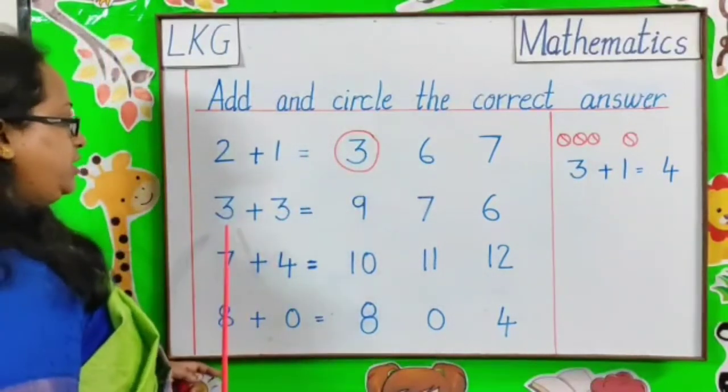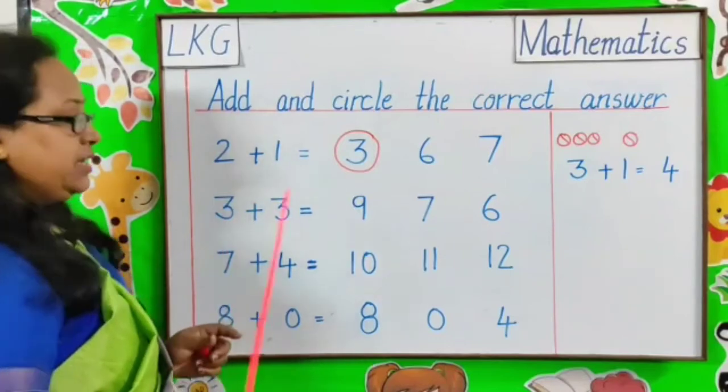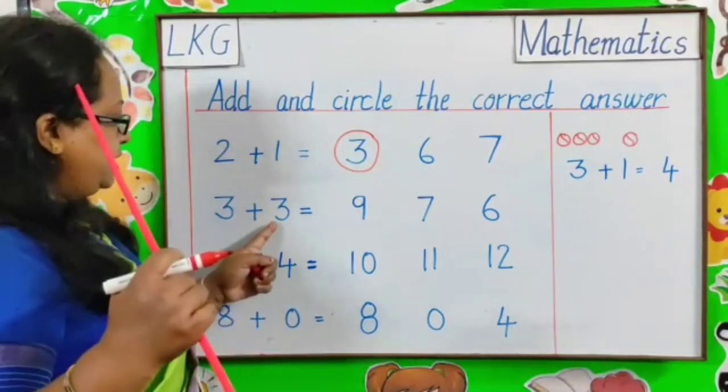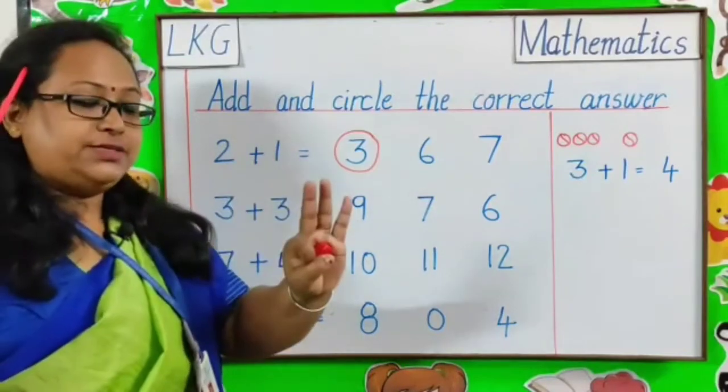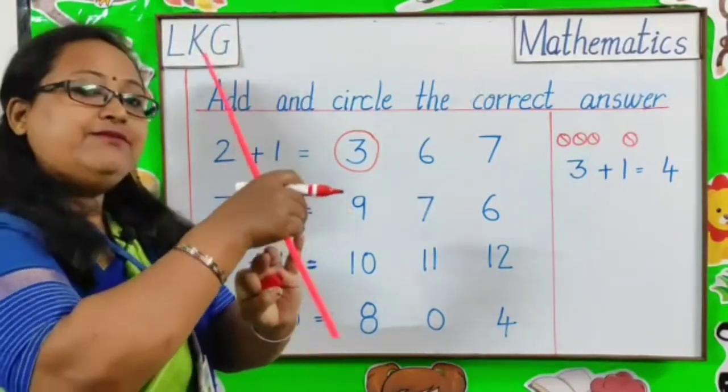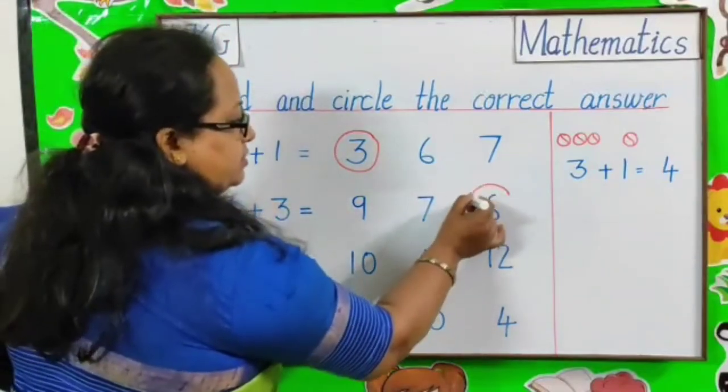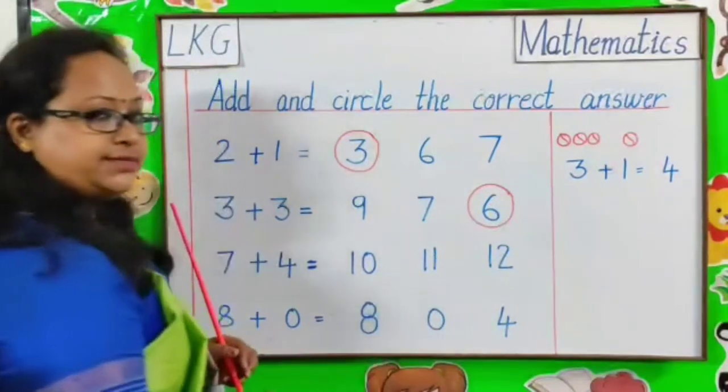Next question. 3 plus 3. 3 in my mind and 3 fingers. 3, 4, 5, 6. Correct answer is 6. We have to circle number 6.